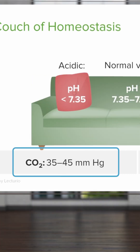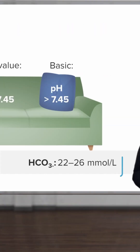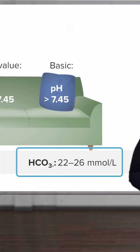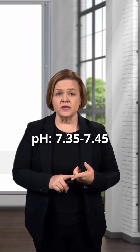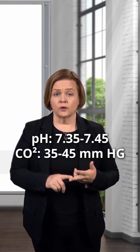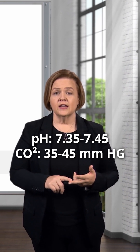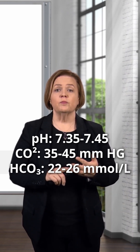Now normal levels for CO2, carbon dioxide, are 35 to 45. Now let's look at the normal bicarb: 22 to 26. So before we really get rolling, I want to make sure that you've written down those three values — the normal pH, the normal carbon dioxide, and the normal bicarb.